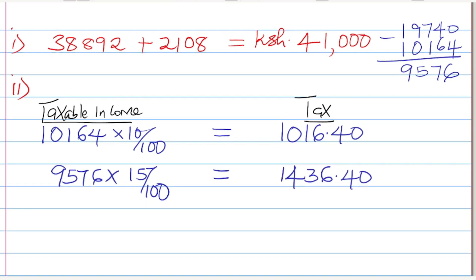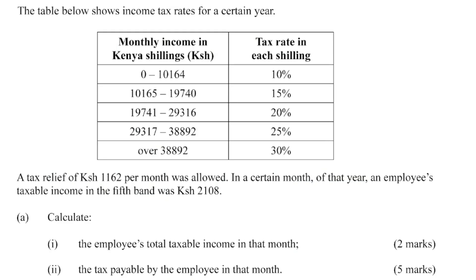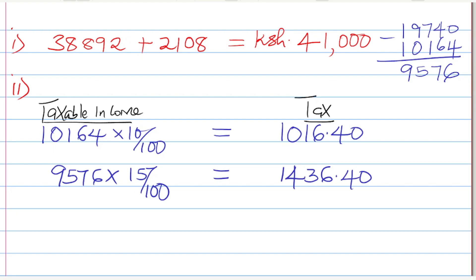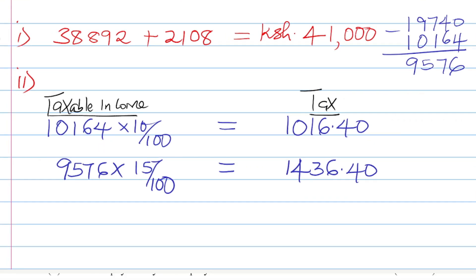The third band begins from 19,741 to 29,316. To get the amount taxed in that band, we take 29,316 minus 19,740 = 9,576. The tax rate is 20%, so 9,576 × 20% = 1,915.20. That is the tax in the third band.